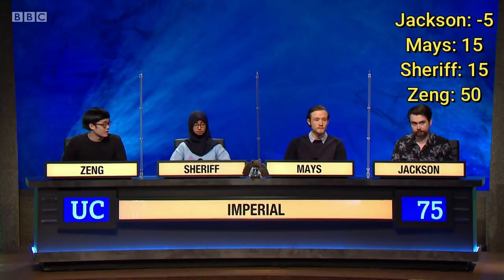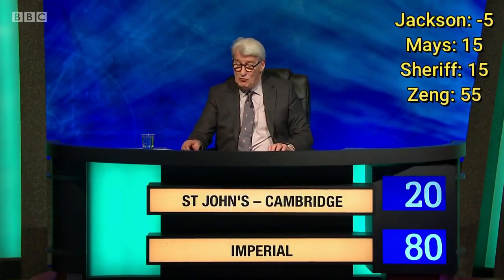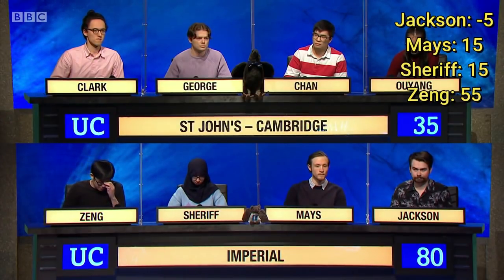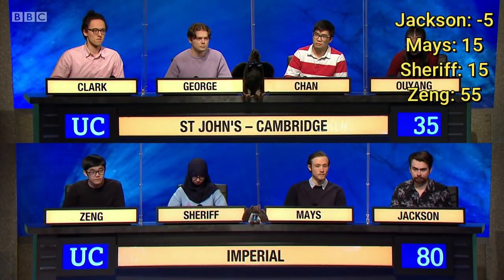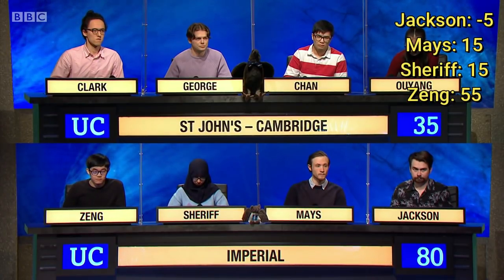Who was the third ruler of the Mauryan Empire? Ashoka. Ashoka is correct. Well done. How is the character Marguerite Chopin described in the title of a film of 1932 by Karl Dreher? The same term can be applied to Lord Ruthven in a prose work of 1819 by John Polidori. The vampire. The vampire is correct.